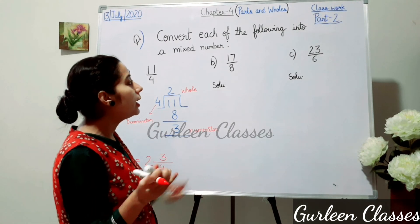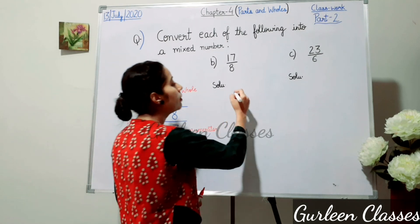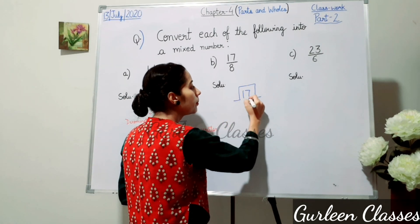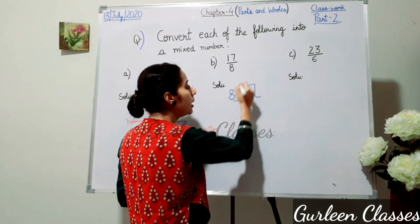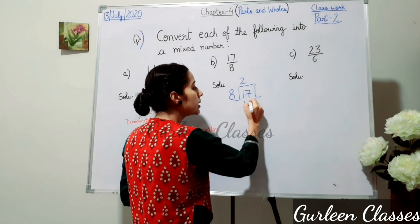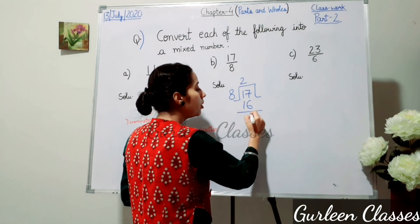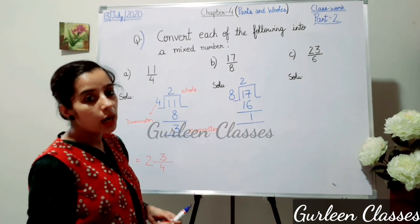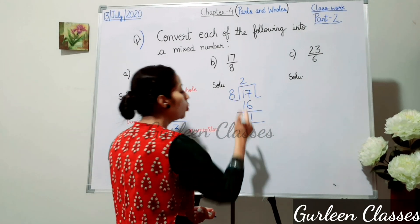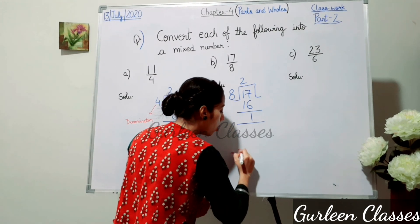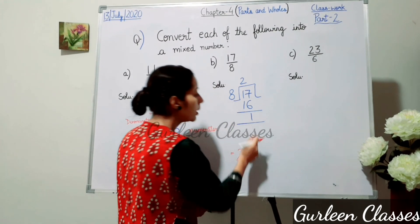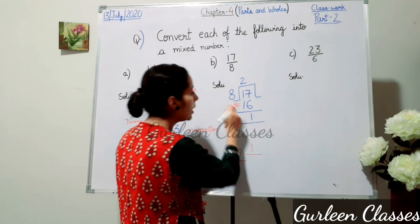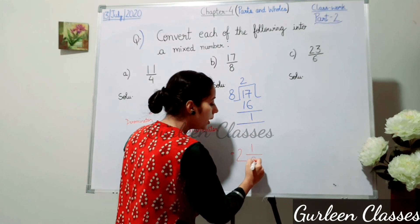Next, 17/8. Divide 17 by 8 — 8 twos are 16 and the remainder is 1. So 2 will be our whole, the remainder 1 will be in the numerator, and 8 will be the denominator. Remember, the denominator will always remain the same.